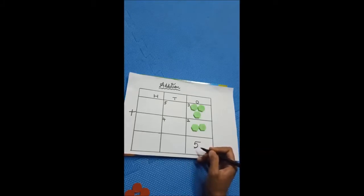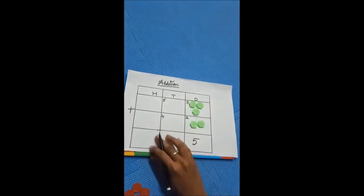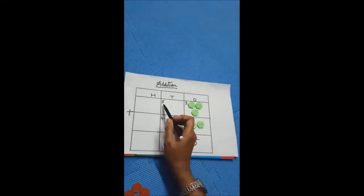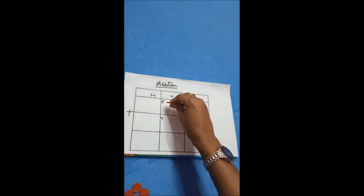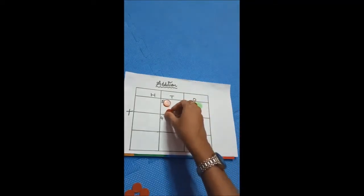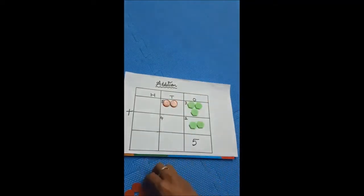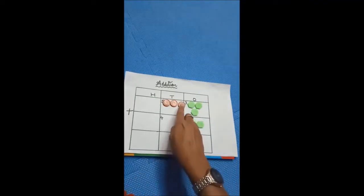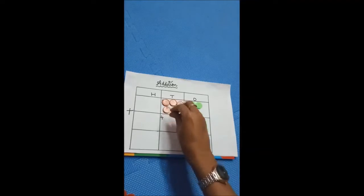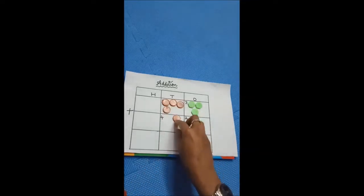We don't have any carry over here. We got only a single digit, so we have written it as it is. Shall we move on to the next place value — the tens place? In tens place, what is the first upper number? Five. So I am going to keep five objects in the first upper row — one, two, three, four, five.